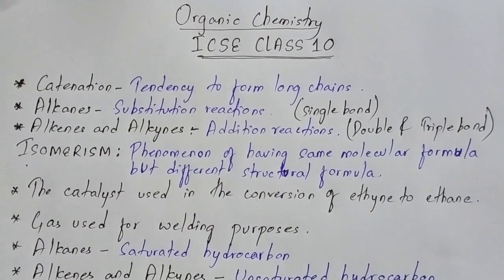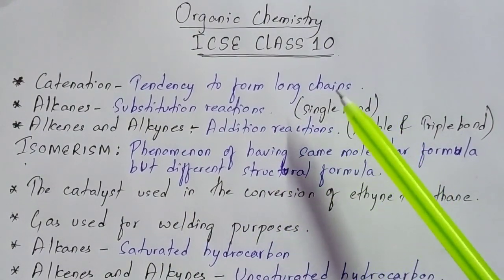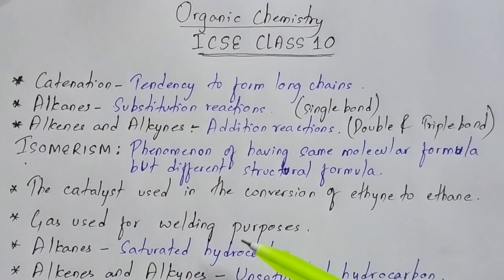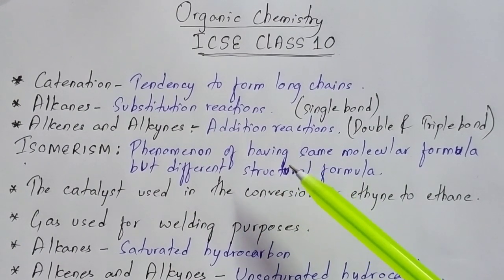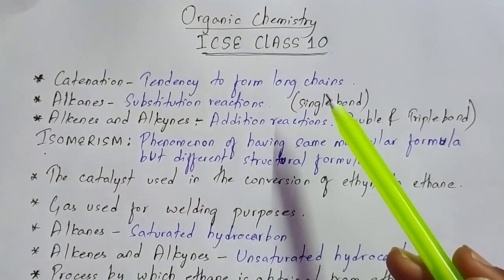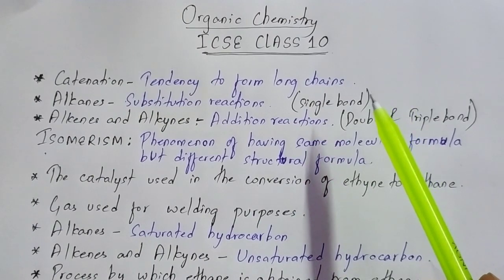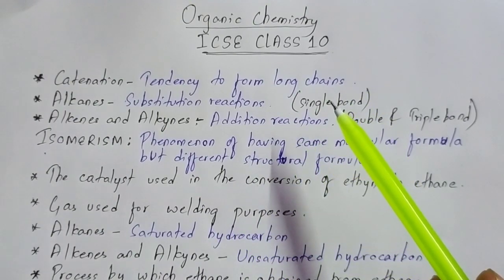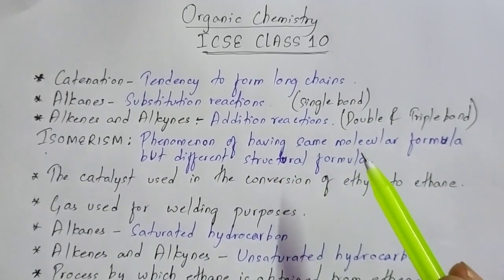Hi guys, this is Barsha in your Chain Mastermind. In this session we are going to do the revision of organic chemistry, which is the last chapter of your chemistry. This is also a kind of notes for you all - only the important parts which are asked and repeated most of the time in your board examination. Do watch this video till the end, and if you find it helpful, do not forget to like and share. You can also download the PDF from the link in the description box.